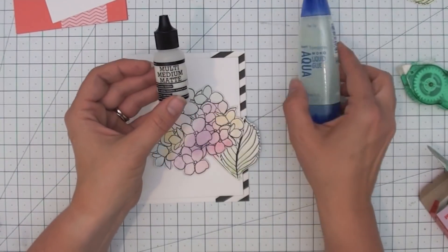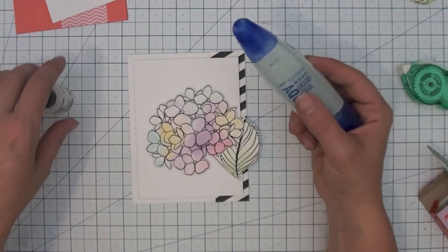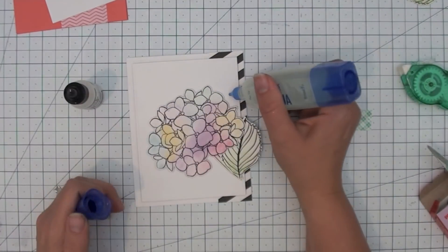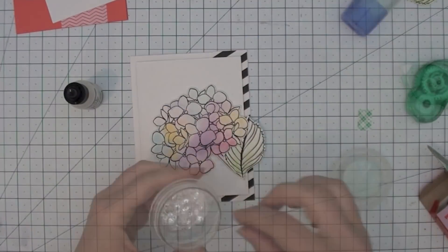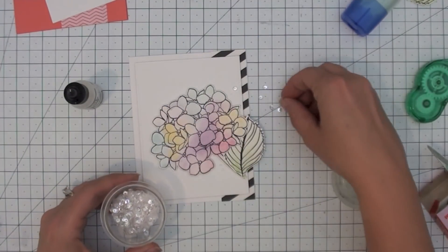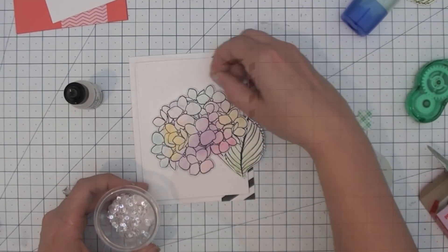I wanted to talk about some liquid adhesive. This is the Ranger Multimedia Matte and the Tombow Mono Adhesive. Either one works essentially the same way. I've had great results with both, so I use them pretty interchangeably, and I use these for adding embellishments to my card.